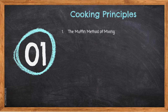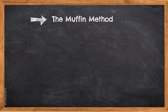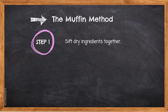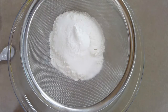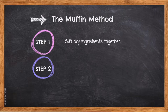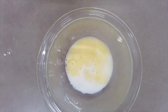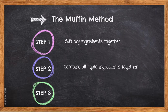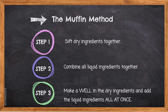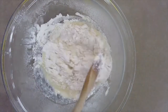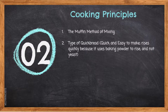Muffins are mixed by the muffin method. The muffin method consists of three steps. Step one: we sift all our dry ingredients together. Step two: we combine all our liquid ingredients together. And step three: we make a well in the dry ingredients and add the liquids in all at once.